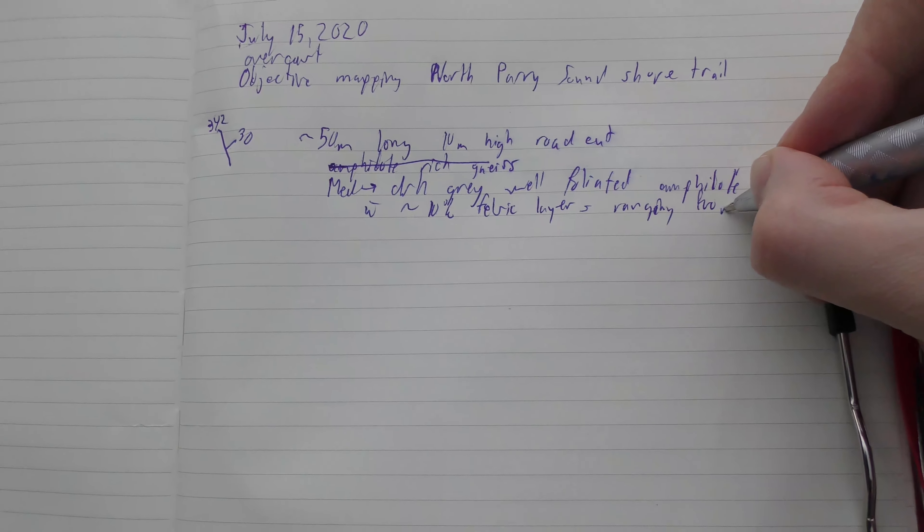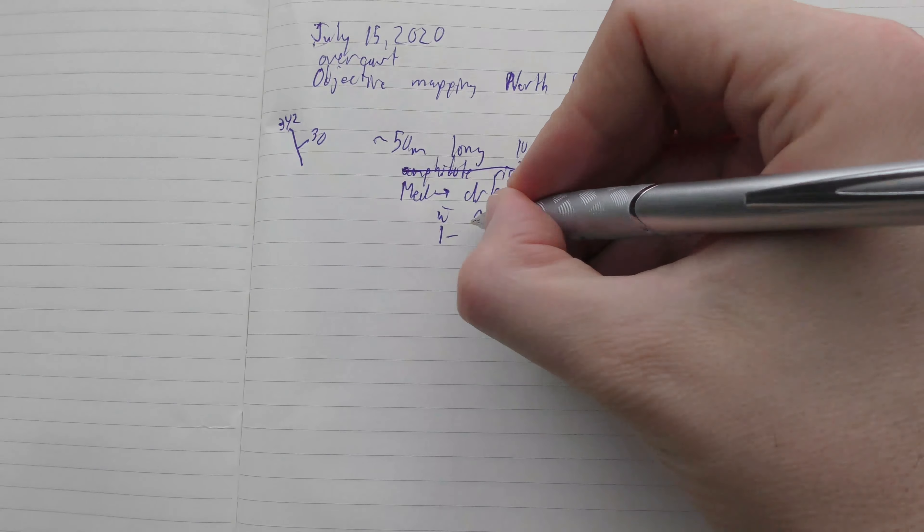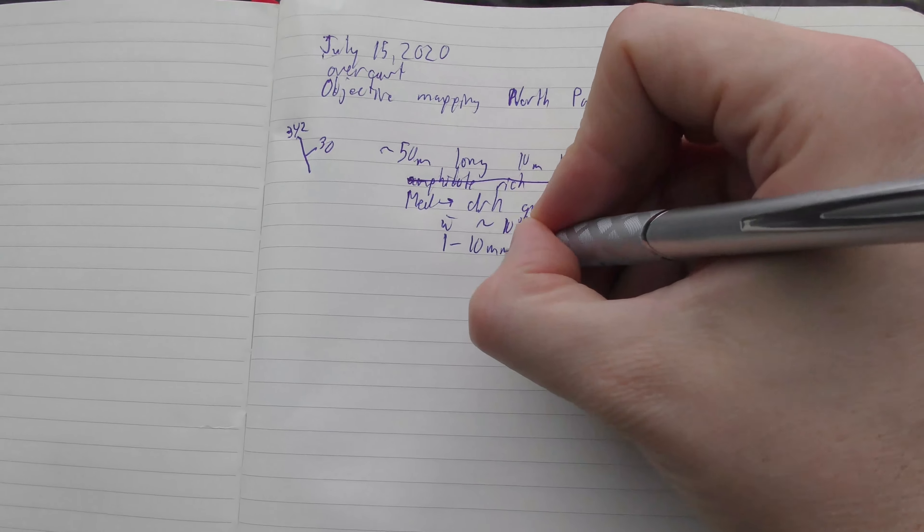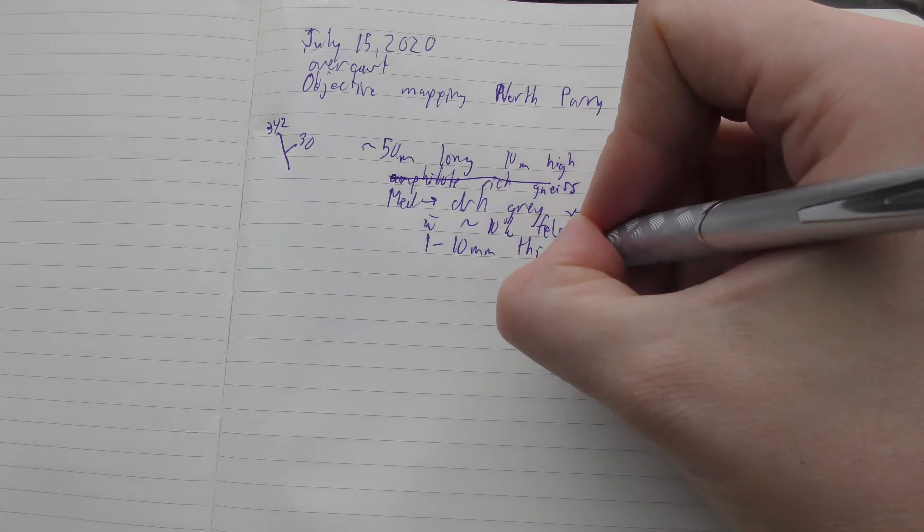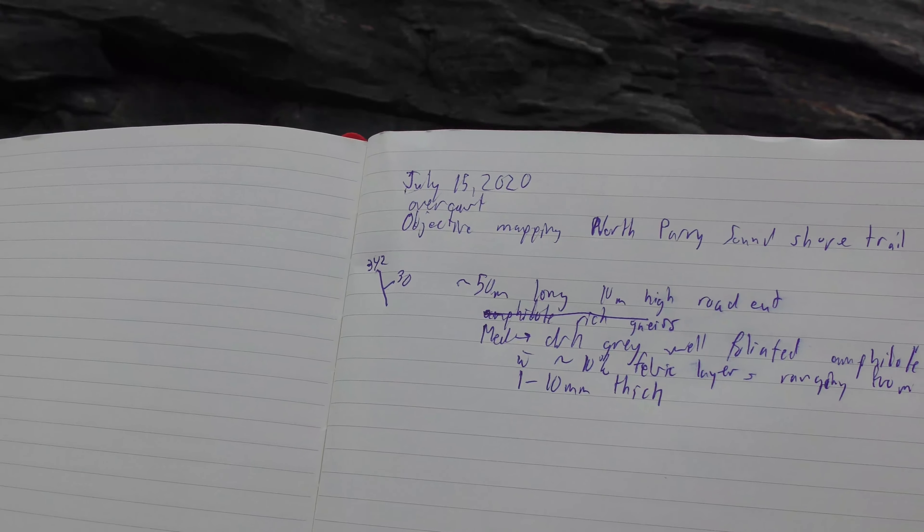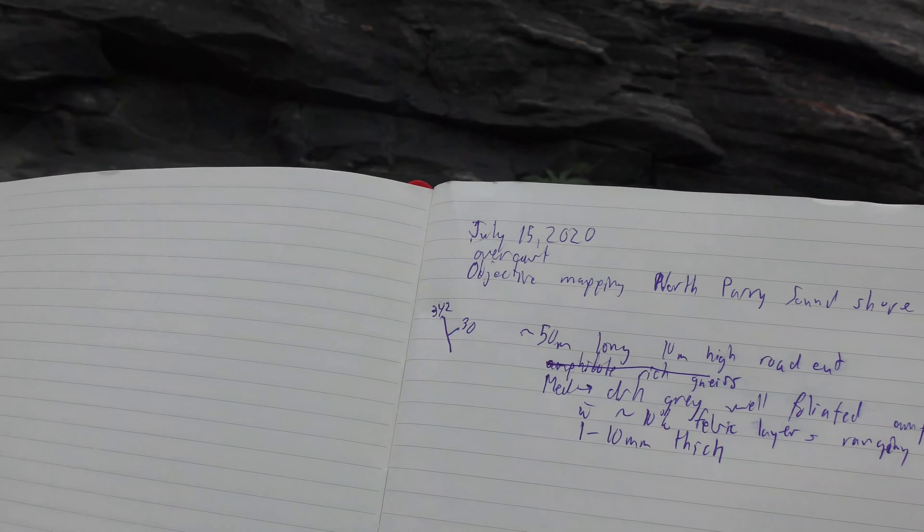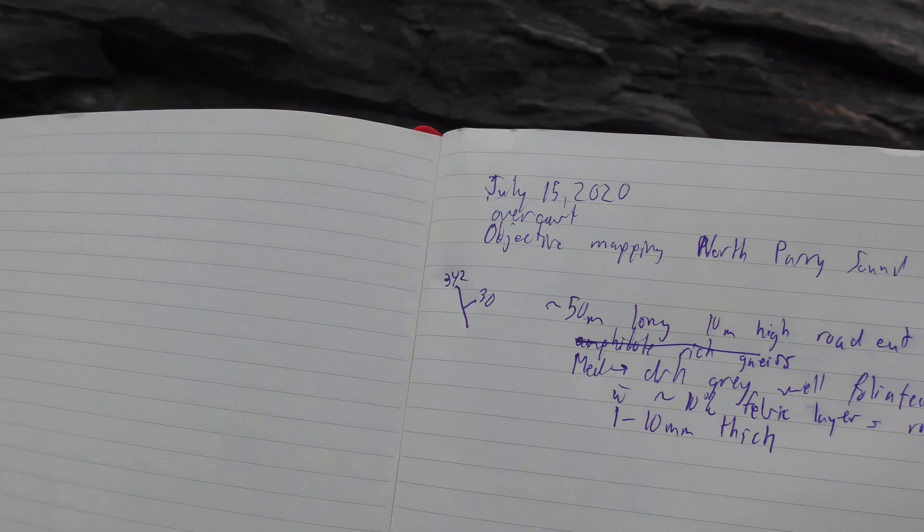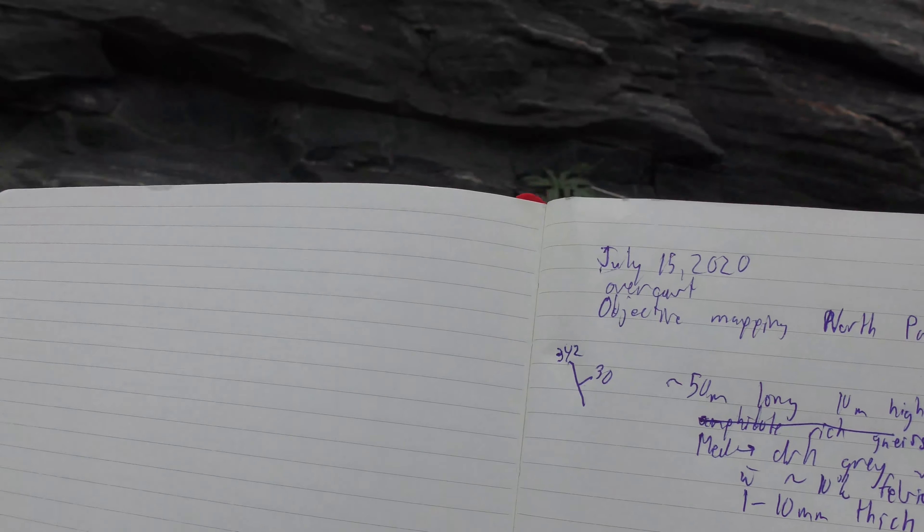Ranging from 1 to 10 millimeters thick. There's a few that are a little bit thicker so we could maybe make a note of that on the other end of the outcrop, but this is kind of most of the outcrop.